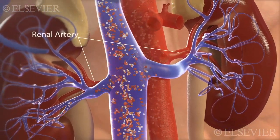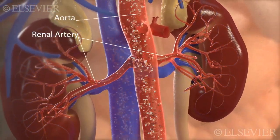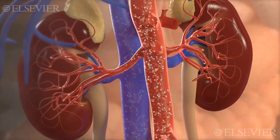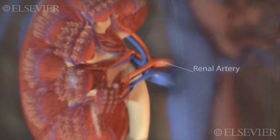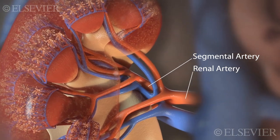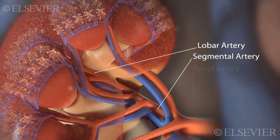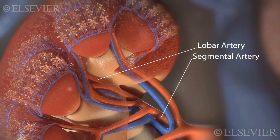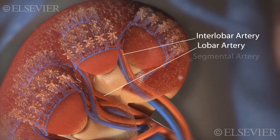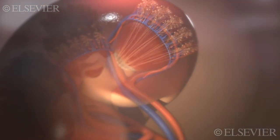The renal artery, which branches off of the aorta, brings blood into the kidney. As the renal artery nears the kidney, it divides into segmental arteries, which divide further to become the lobar arteries. The lobar arteries divide into the interlobar arteries, which branch into afferent arterioles.